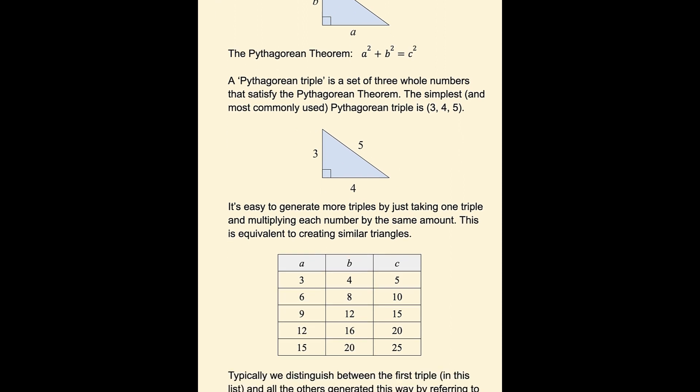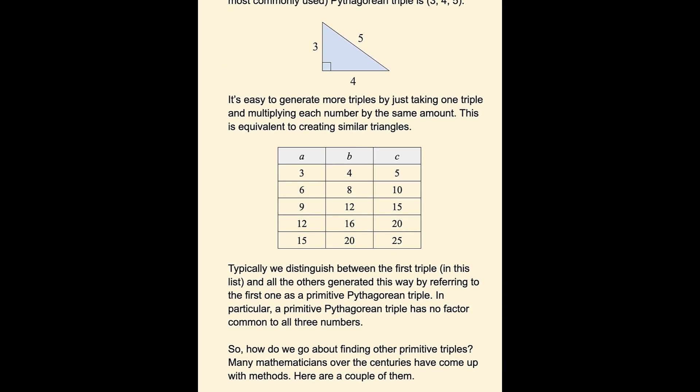It's easy to generate more triples just by taking one triple that you already know and multiplying each number by the same amount. This is equivalent to creating similar triangles. So we could have 6, 8, 10 just by multiplying each of 3, 4, 5 by 2, or 9, 12, 15, etc.